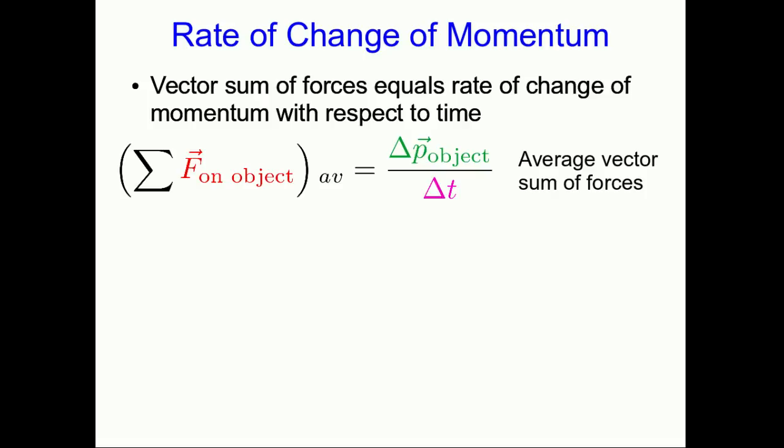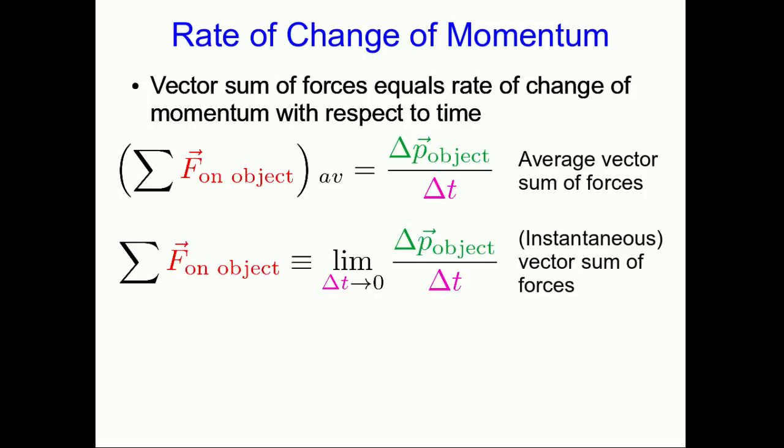We know what to do with this. We take the limit as our time interval goes to zero, and now we have an instantaneous rate of change of momentum, which is equal to the instantaneous vector sum of forces. As usual, if I don't say average, I mean instantaneous, and so I won't usually say instantaneous.